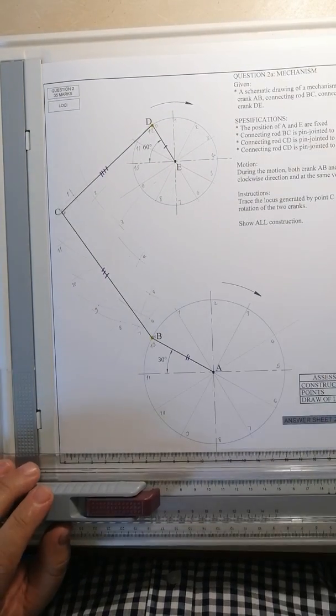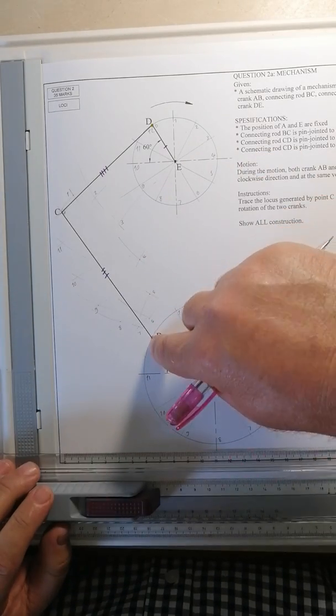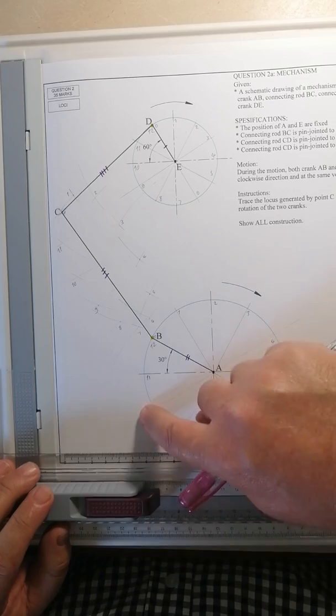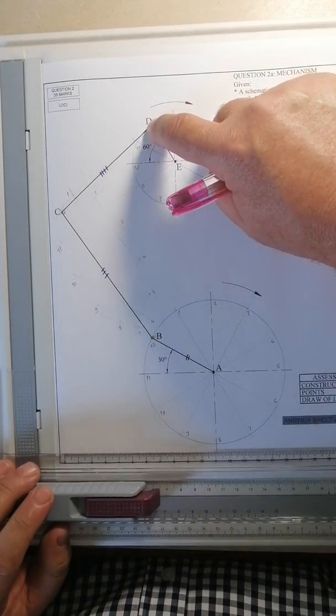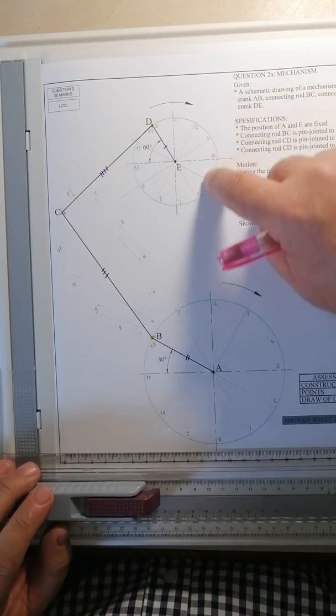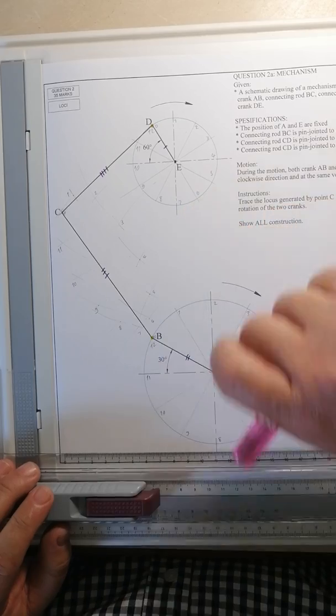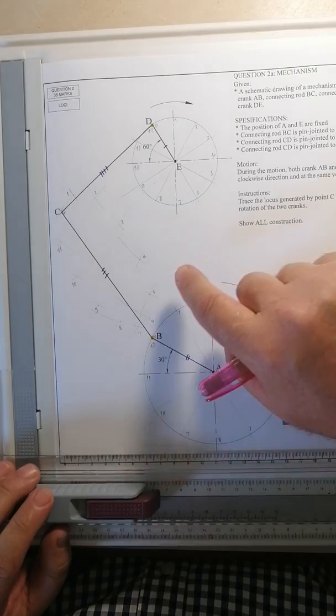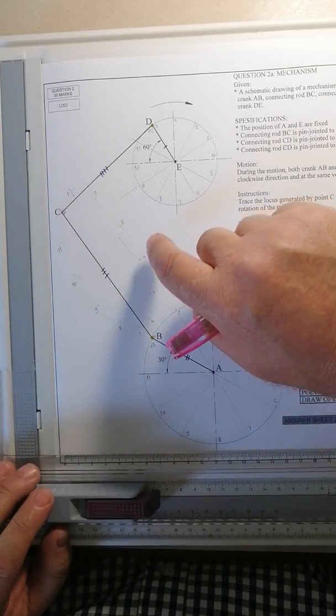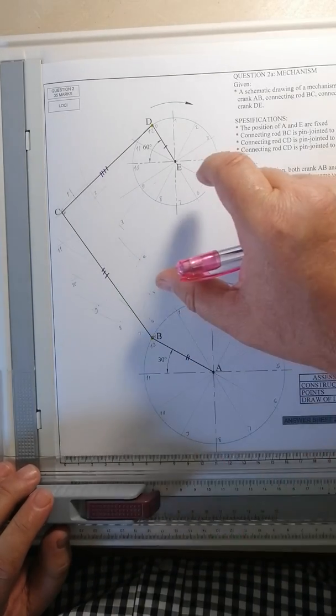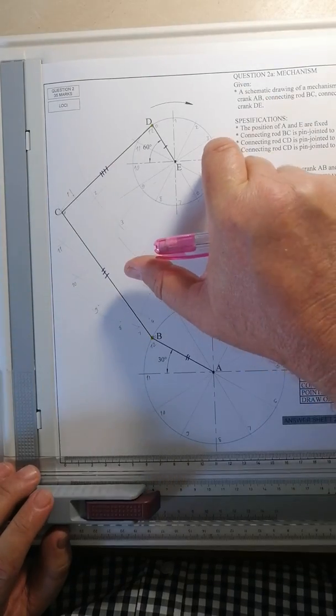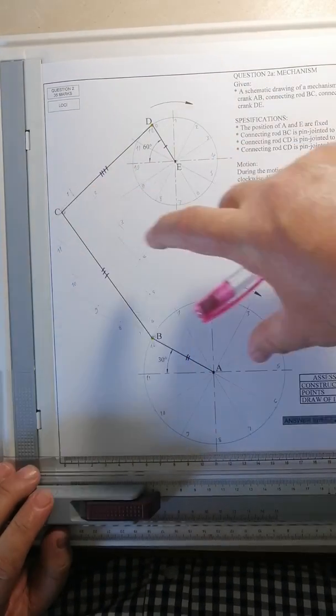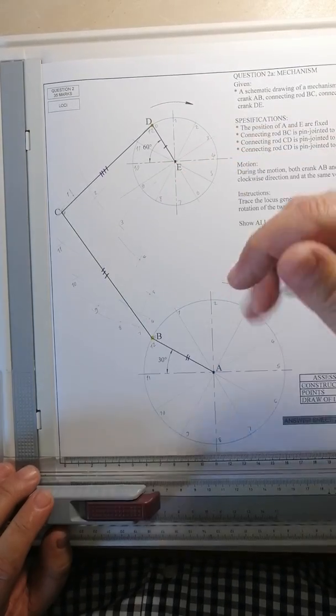There we go. So I'm recapping. The point B was semi-fixed. Point B can only be on this circle. Point D semi-fixed can only be on that circle and we know where the specific positions are. And then we see that this is fixed, the distance and that distance is fixed. And then we needed to carry on with points number 4. So at that distance, at D4, make an arc. At, with that distance, at B4, make an arc. There's point 4.